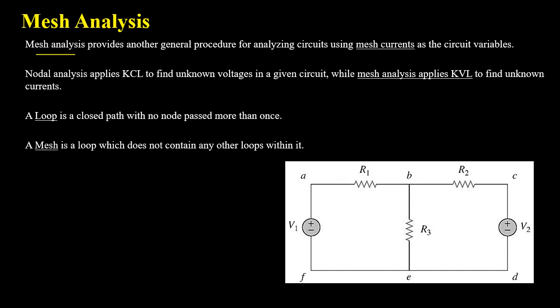In the method of nodal analysis we were using node voltages as circuit variables, and solving the equation for node voltages gives us currents passing through the elements. Whereas in case of mesh analysis we will be using mesh currents to find currents passing through various elements, and then using Ohm's law we can find voltages across the elements. So in mesh analysis our unknown variable will be the mesh current.